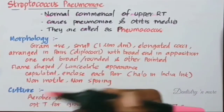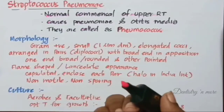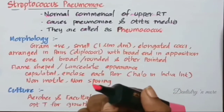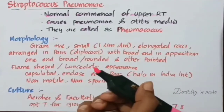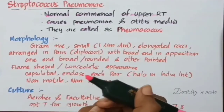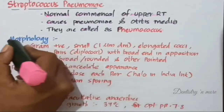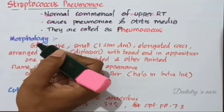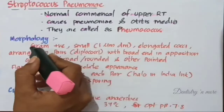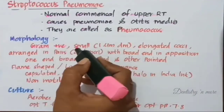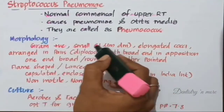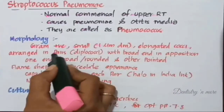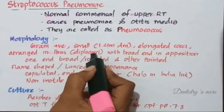They differ from Streptococcus in their morphology because they are diplococci, and in their bile solubility, optochin sensitivity, and by a specific polysaccharide capsule. Morphologically, Streptococcus pneumoniae are gram-positive bacteria, small at one micrometer in diameter, elongated cocci arranged in pairs, and hence called diplococci.